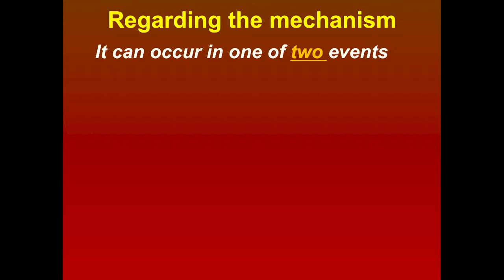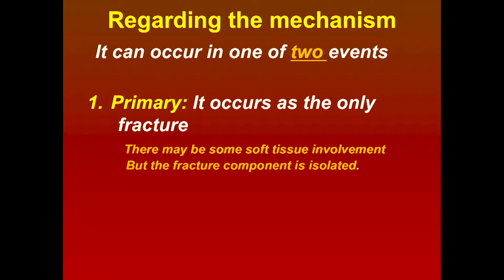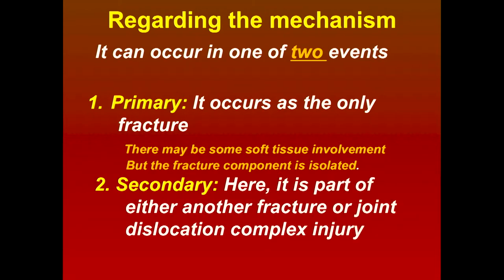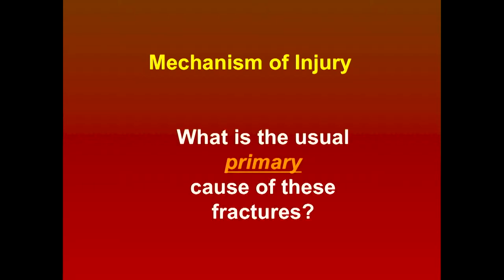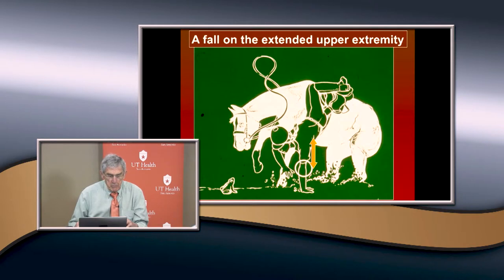Now, what's the mechanism of radial neck fractures? It can occur in one of two ways. It can be primary when it's the only injury - an isolated injury with some soft tissue involvement. The usual cause is a fall with the arm in extension. They fall with the arm in extension, usually the non-dominant arm, to try to break the fall. They don't break the fall - they break the elbow. Most children have a valgus carrying angle of about 15 degrees on average.